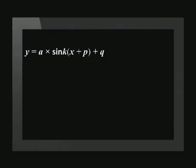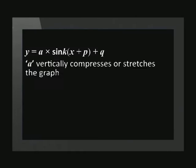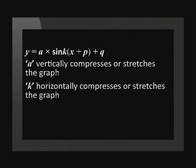Let's summarize what we've learned so far. In the formula y equals a times sine k into brackets x plus p, plus q: a vertically compresses or stretches the graph, and the value of k horizontally compresses or stretches the graph. We can also say that the period of a sine graph is equal to 360 degrees divided by k.